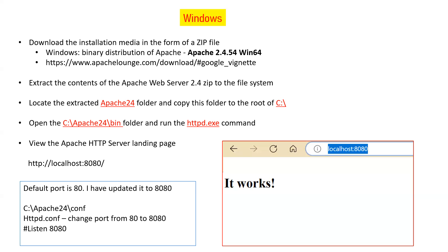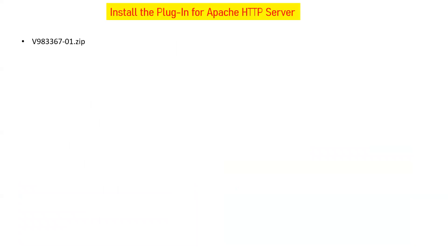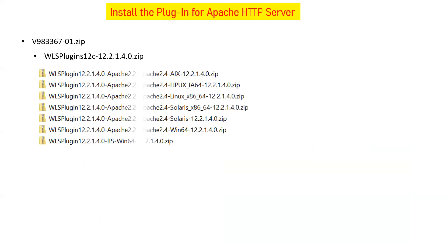Now that installation is done on Linux and Windows, the second part is installing the plugin. For basic knowledge of plugins, you can go through part one of this series. You can download the plugins from the Oracle website. Once you download and extract the plugin zip file, you will see folders specific to particular operating systems — for example, the Windows 64 Apache zip file is for installing the plugin on Windows. For Linux, AIX, HP-UX, or Solaris, you use the corresponding SO file from that particular zip file.